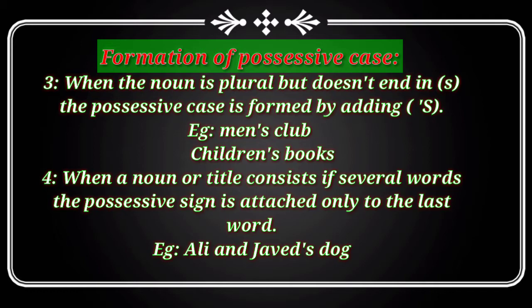When a noun or title consists of several words, the possessive sign is attached only to the last word. This means that if you have a noun or a title which is more than one word, you only add apostrophe S to the final word.